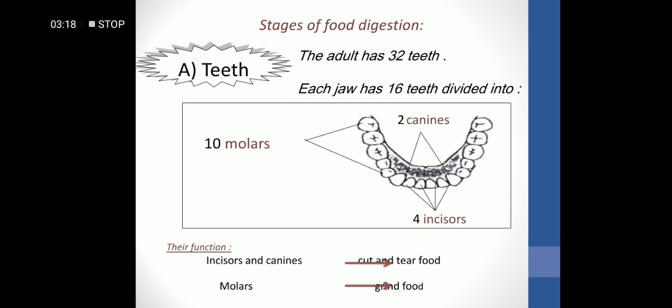The first part in the mouth: teeth. The adult has 32 teeth. Each jaw has 16 teeth. We have two jaws: the upper jaw and the lower jaw. 16 plus 16 equals 32 teeth.